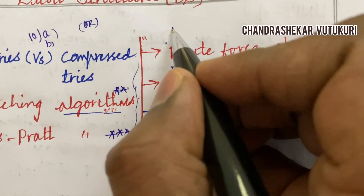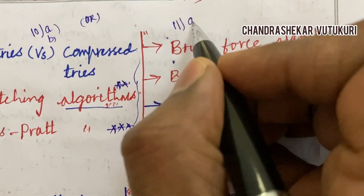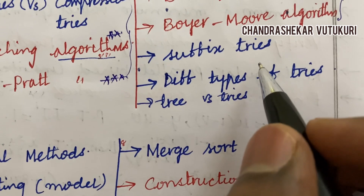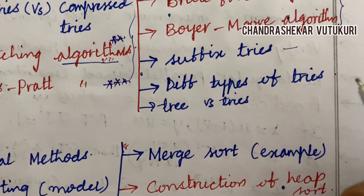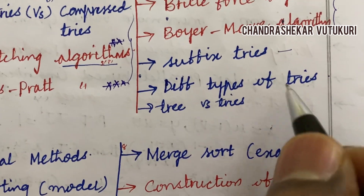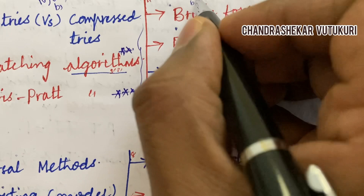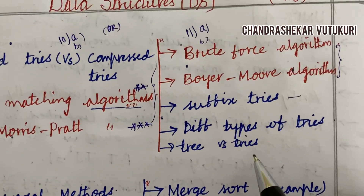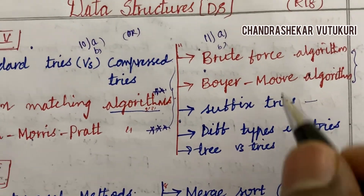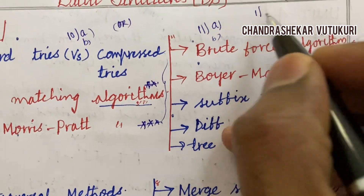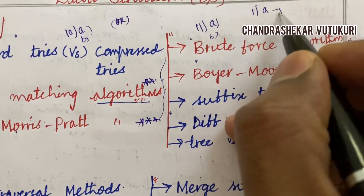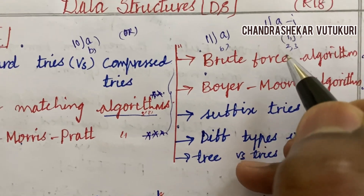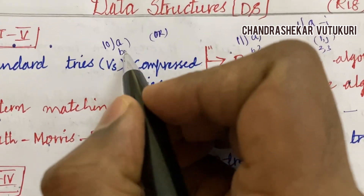Define the term suffix tries — that may be a short question — and what are the different types of tries may be the B question. Trees versus tries may also be one of the short questions. The short questions 1I and 1J are for 2 and 3 marks, while 10AB and 11AB are each for 5 marks each.